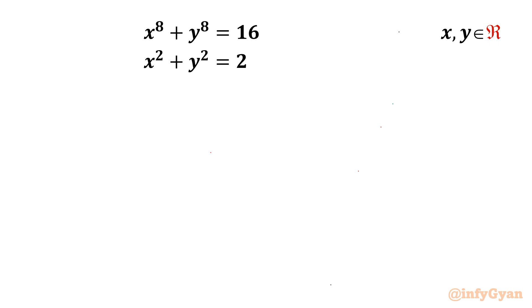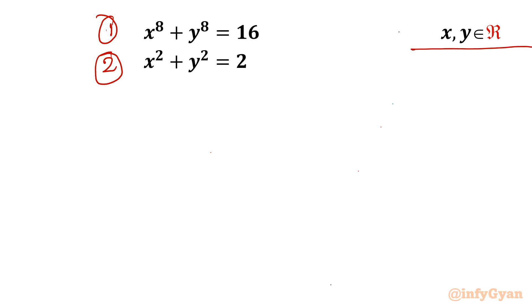Welcome back to Infigyan, my dear friends. In this video we are going to take up one very interesting system of equations. We have x⁸ + y⁸ = 16 and x² + y² = 2, where x and y belong to the real numbers. Let us get started by writing the equation numbers.